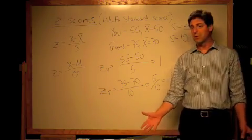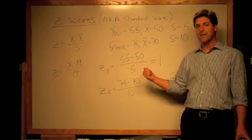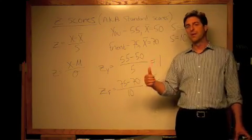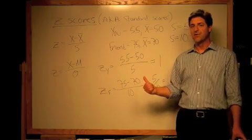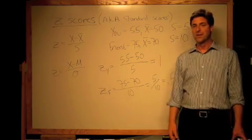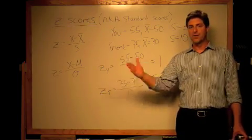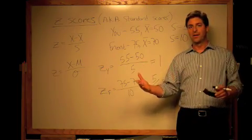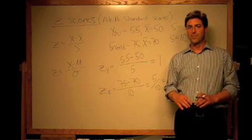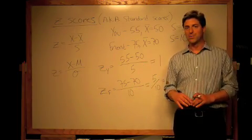You don't know those things. But what you do know is your score was one standard deviation above the mean for your class. Your friend's score was only half a standard deviation above the mean for your friend's class. And that's what the z-score tells you: how far above the mean or below the mean is an individual score from the sample mean or from the population mean.